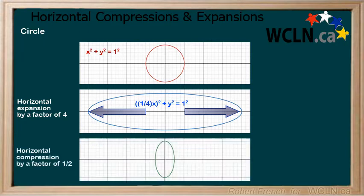Next, we will apply a horizontal compression to the original circle by a factor of 1 half. We do this by multiplying x by 2, and we can see how the graph changes accordingly.